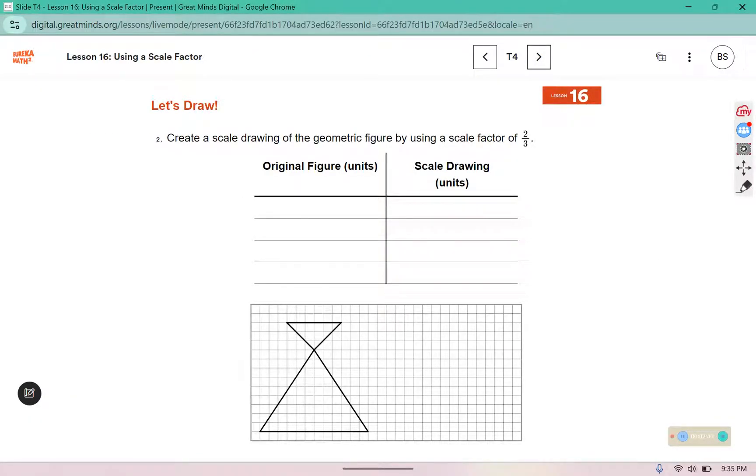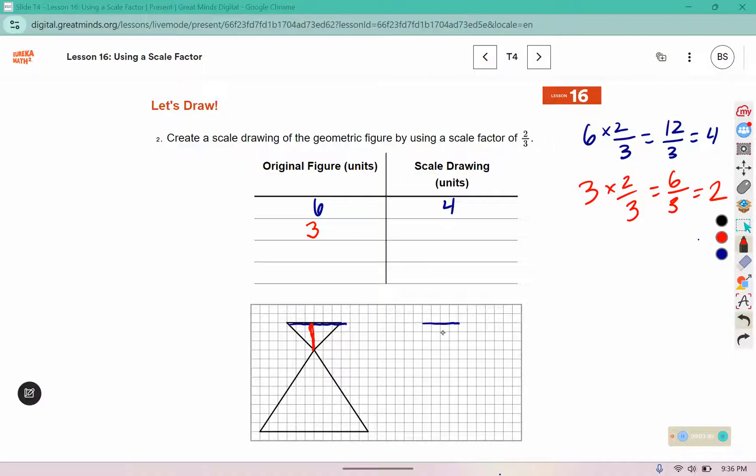Create a scale drawing of the geometric figure by using the scale factor of 2/3. I'm going to use several side lengths from this picture. I see that this is 1, 2, 3, 4, 5, 6 wide in the original picture. Well 6 times 2/3: 6 times 2 is 12, and 12 split into 3 parts is 4. So I'm going to draw a segment that is 4 wide. For the next piece I see that this is 3. Three times 2/3: 3 times 2 is 6, and 6 divided by 3 is 2. So I'm going to make this one be 2 tall.